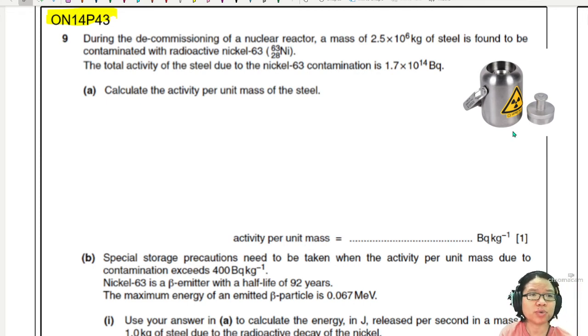In this question, we have a process where a nuclear reactor is decommissioned. And this much steel is found to be contaminated with nickel-63. Maybe it is the wall of the nuclear reactor, maybe it's a containment, maybe it's part of the factory or the reactor. So total activity of the steel due to nickel contamination is this much. I'm just going to label these values. This is mass M, this is the activity A.